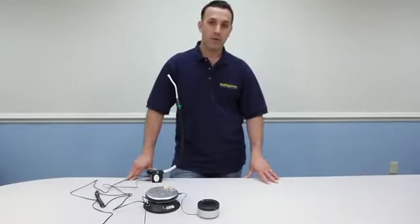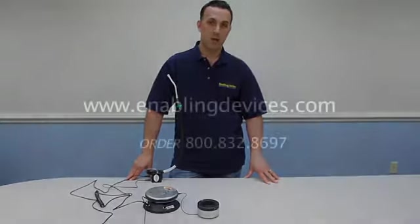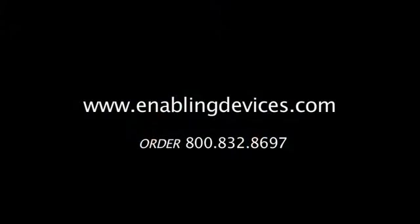So there you have it, our item number 970 double closure sip and puff on a gooseneck. You can purchase this item through our website at enablingdevices.com, through our phone sales at 1-800-832-8697, and our catalog. This is Vinny Lovoti for Tech. Thanks for stopping by and I hope you enjoyed the video.